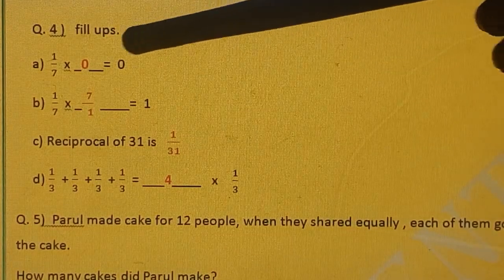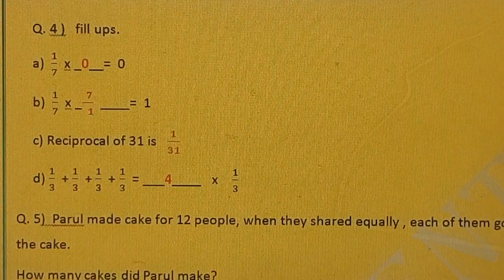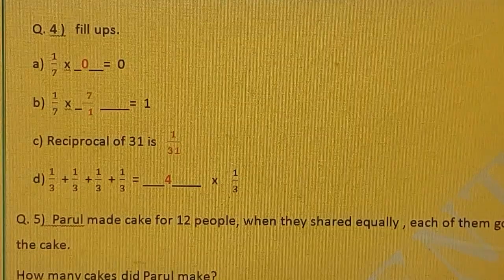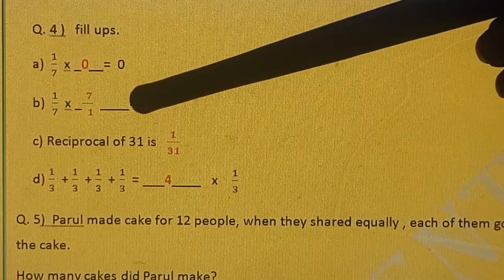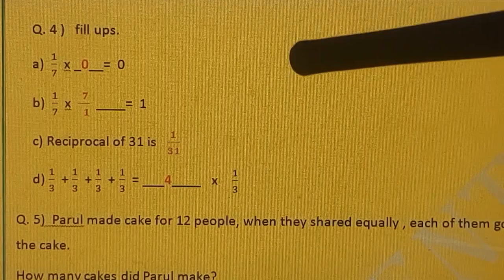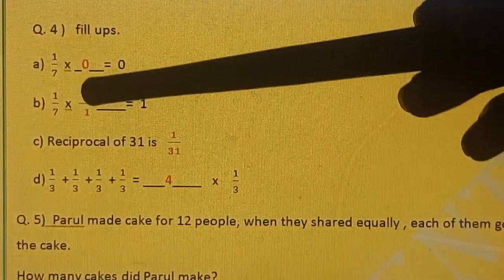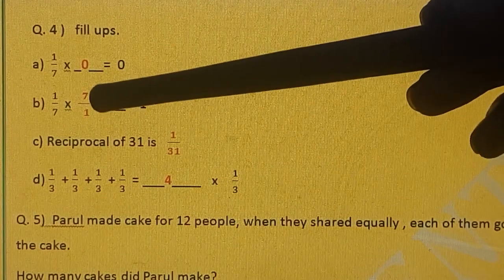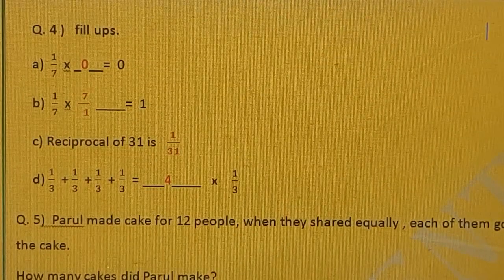Question number 4. Fill ups, 1 upon 7 multiply dash is equal to 0. When 0 is multiplied with any fraction then we will get 0. So our answer will become 0. 1 upon 7 multiply by dash is equal to 1. So 1 upon 7 multiply by 7. 7 will cancel the 7. 7 ones are 7, 7 ones are 7. So your answer will be 1 only.